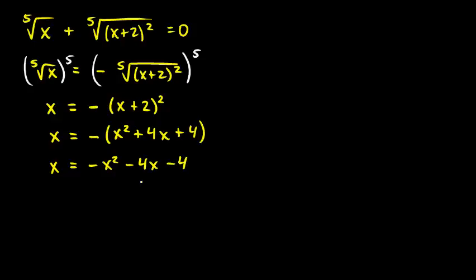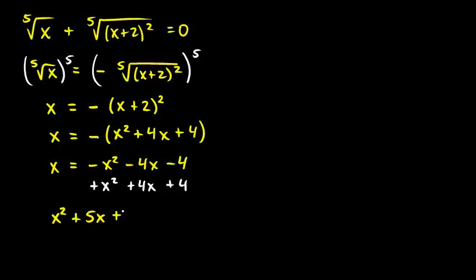Now I'll rearrange these terms. I'll add x squared, 4x, and 4 to each side. Everything on the right cancels out, leaving 0, and on the left I get x squared plus 5x plus 4 equals 0. This is a simple quadratic that factors as x plus 1 times x plus 4 equals 0.